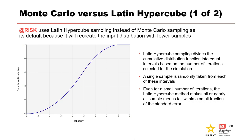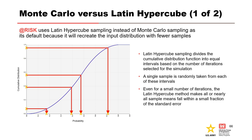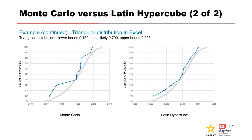Another sampling method is Latin Hypercube, which is the default method used by At-Risk. This method recreates the input distribution with fewer samples than Monte Carlo sampling requires. Latin Hypercube sampling divides the CDF into equal intervals based on the number of iterations selected, then randomly selects a single sample from each interval. As a result, even for a small number of iterations, this method makes nearly all sample means fall within a small fraction of the standard error. Comparing 10-iteration results: Latin Hypercube sampling does a much better job of matching the expected distribution with a limited number of iterations.